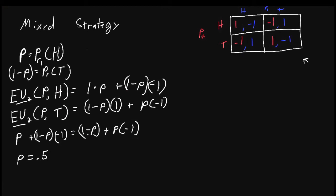Let's do an experiment. What if p was greater than 0.5? That means player one would play heads more than half of the time. In that case, player two would always prefer to play heads. Similarly, if p is low, player one would be playing tails most of the time, and therefore player two would always want to play tails. However, when player one mixes between heads and tails with probability 0.5, player two doesn't care if he plays heads or tails.